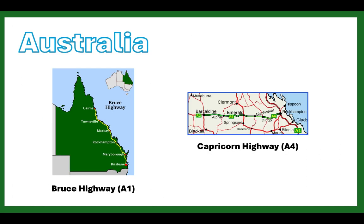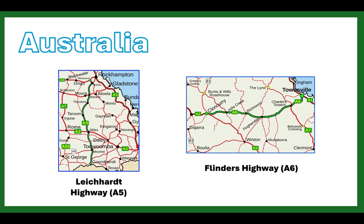Australia has a lot of highways and the system is a bit of a mess, so learning the major ones helps. In Queensland: the Bruce Highway goes Brisbane to Cairns (A1), the Capricorn Highway goes inland from Rockhampton to Barcaldine, the Leichhardt Highway goes from Rockhampton to the New South Wales border (A5), and the Flinders Highway goes from Townsville to Cloncurry (A6). Knowing both names and numbers is useful — names appear on highway signs while numbers are what you scan for on the map.